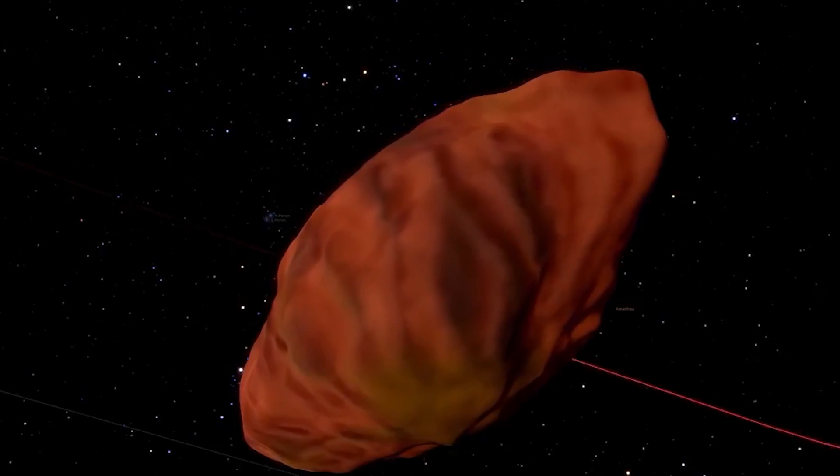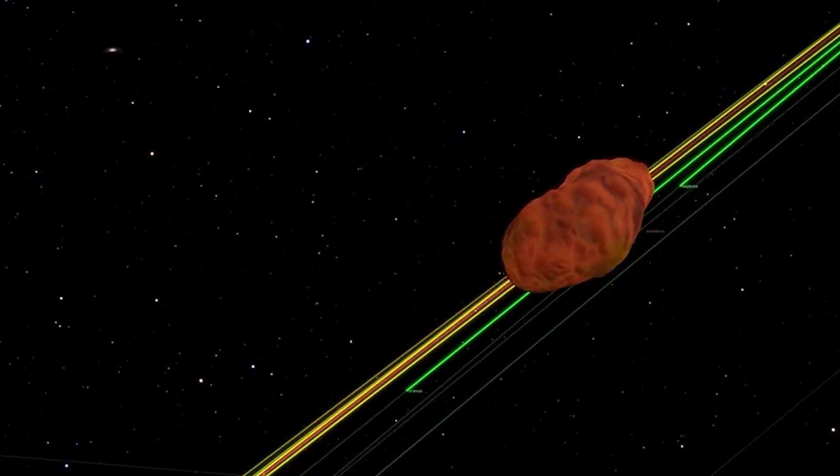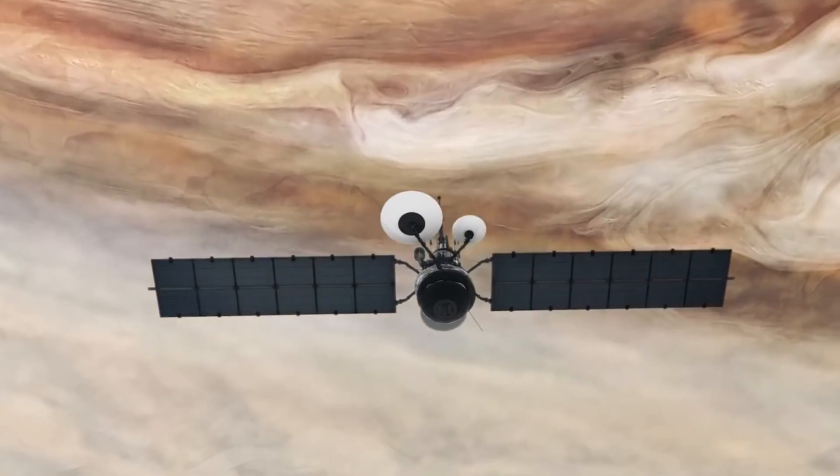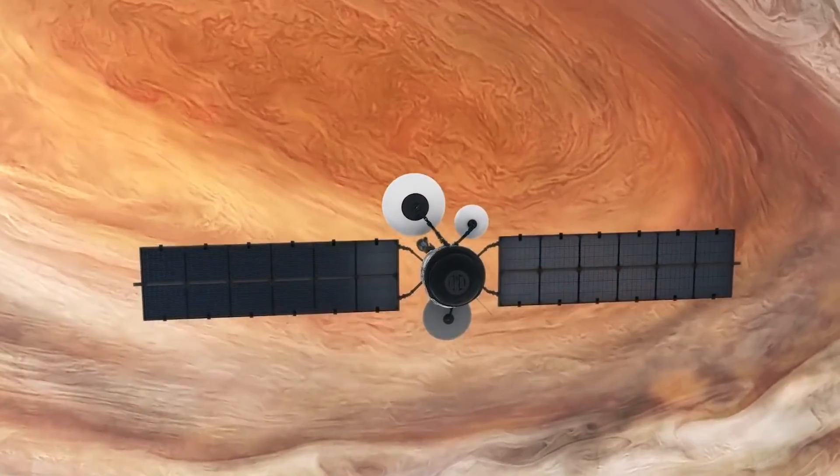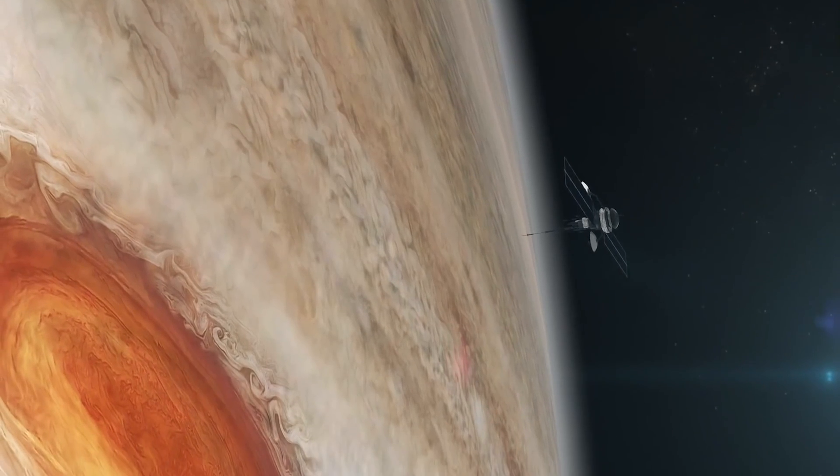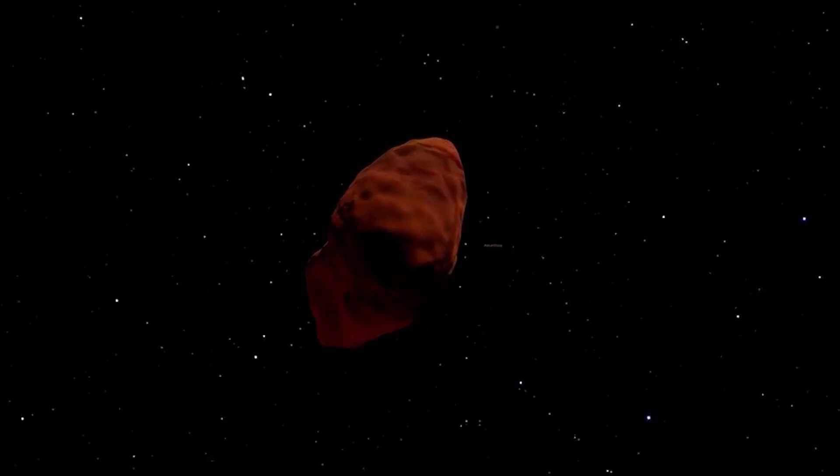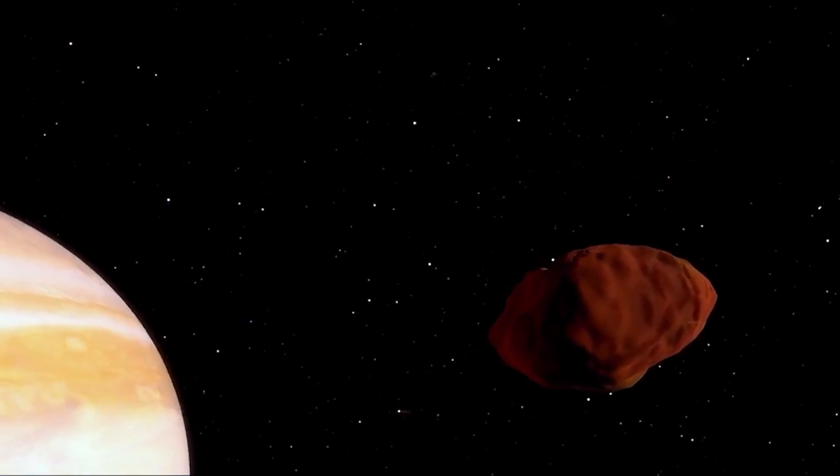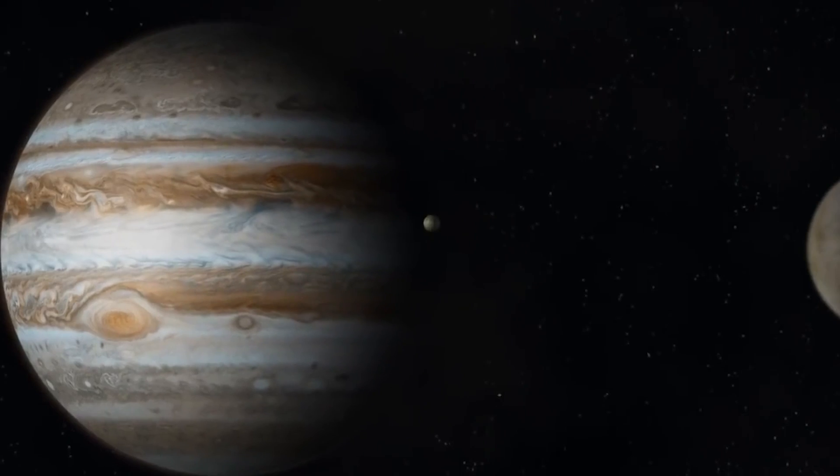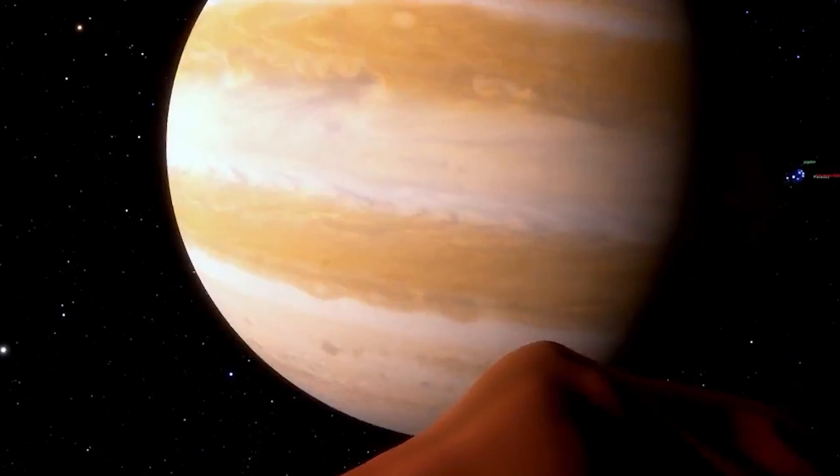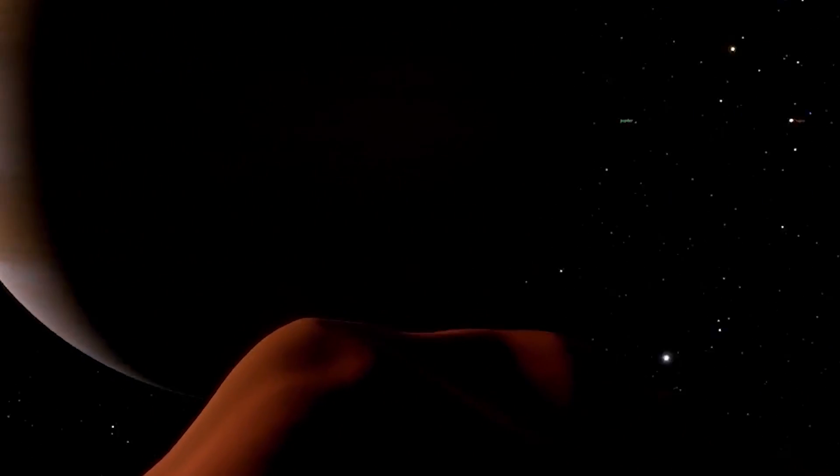Amalthea is Jupiter's third closest moon and it completes a full orbit in less than 12 hours. Amalthea was the last planetary satellite discovered directly or via the use of a telescope as opposed to imaging equipment like a satellite or probe. In terms of Jupiter's moons, Amalthea remains a mystery. We don't know much about Amalthea with clarity because there haven't been many in-depth observations.